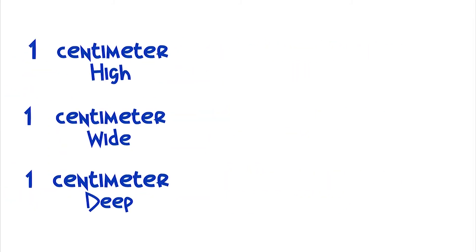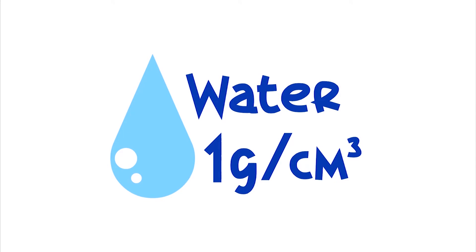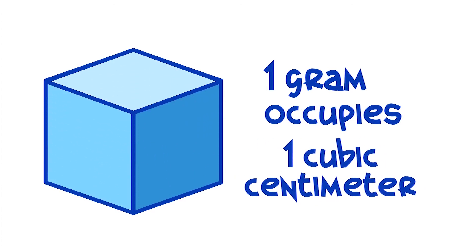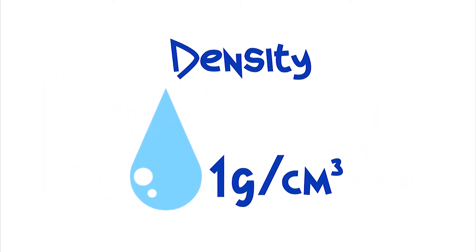For example, water has one gram per cubic centimeter, which means that one gram of water occupies one cubic centimeter. This is the density of water.